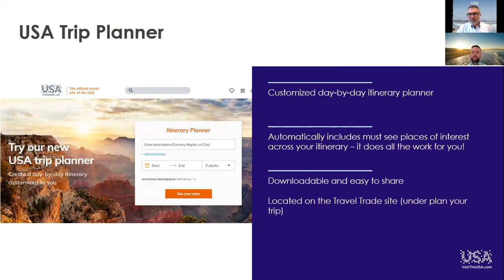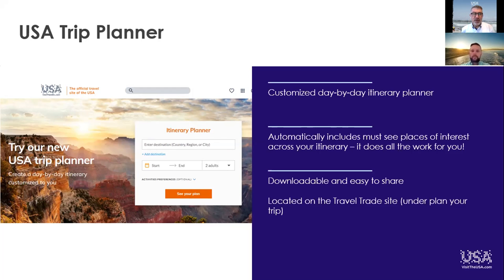Our USA Trip Planner is a fantastic tool on our travel trade site, hugely useful for you and your clients in the future for self-drives or fly drives. You put in your destinations, a start and end date, and it creates a customized itinerary including all the must-sees and must-dos in each city or state you're travelling through. It has over 230 million pieces of individual data across all cities and states. It's downloadable, very easy to share, and you can put your own branding on it. If you haven't had a try, I encourage you to go to the travel trade site.